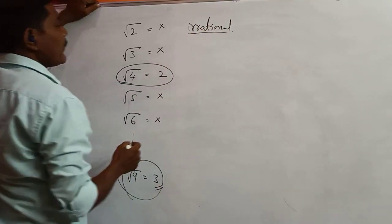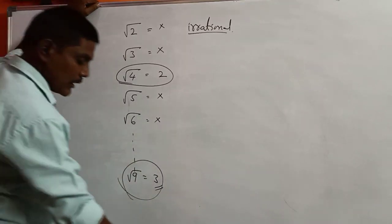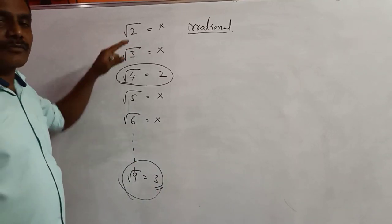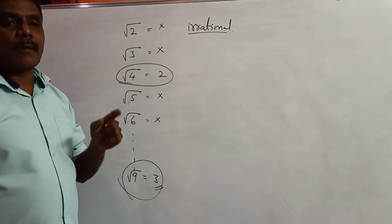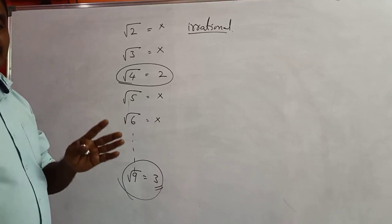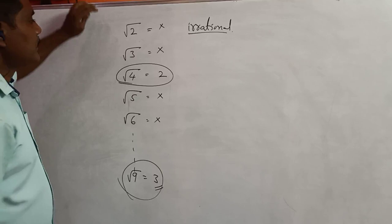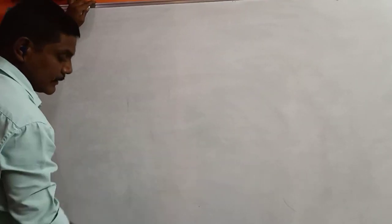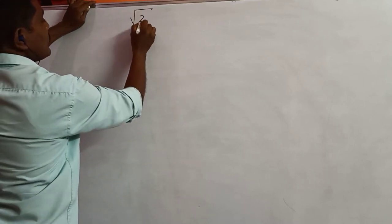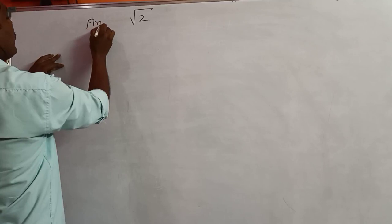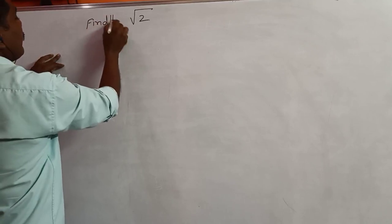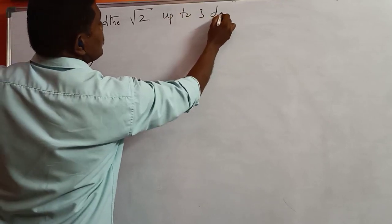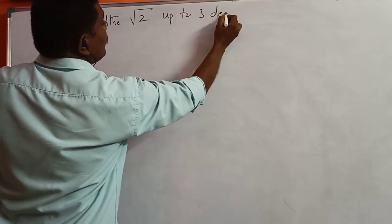How to find that square root? I will tell you how to find the square root — of course we cannot find the exact square root, but up to 3 decimals, 4 decimals, 5 decimals, you can find it. Now I am finding the square root of 2. Find the square root of 2 up to 3 decimals.